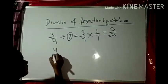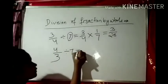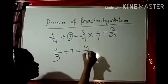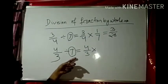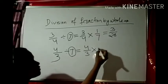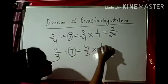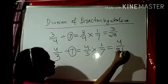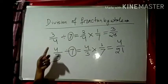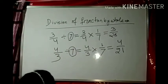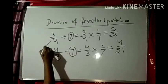Next, the improper fraction example: 4 by 3 divided by 7. We take the reciprocal of the divisor 7, which is 1 by 7. So 4 by 3 into 1 by 7: 4 times 1 equals 4, and 3 times 7 equals 21. The answer is 4 by 21. That is division of an improper or proper fraction by a whole number.